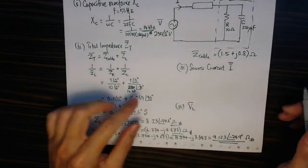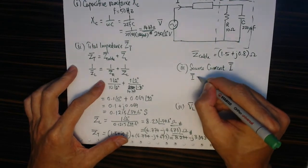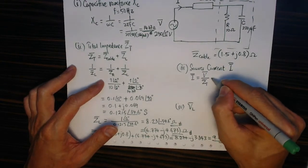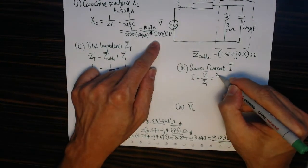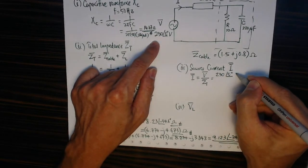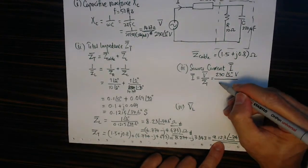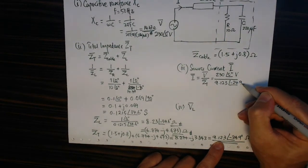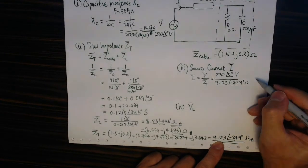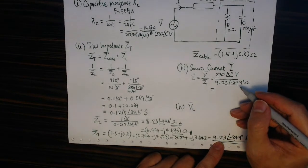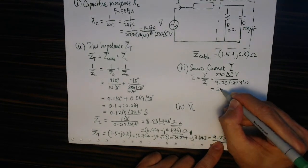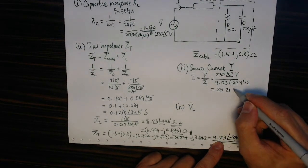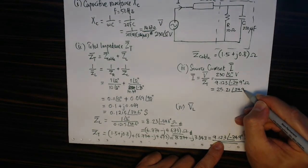Now part 3 wants us to calculate the source current. Source current is calculated using Ohm's law, V divided by ZT. So in this case it's 230 volts at angle 0 degrees divided by the total impedance 9.13 at angle of minus 24.9 degrees. That gives me 25.21 amperes at the angle of 24.9 degrees.